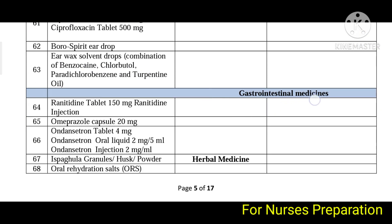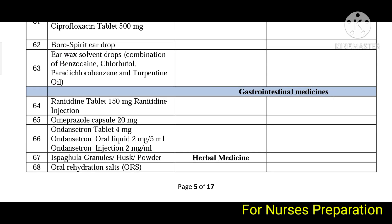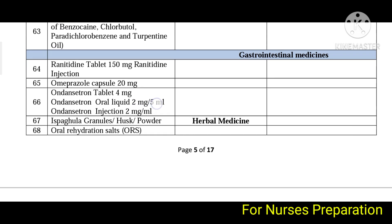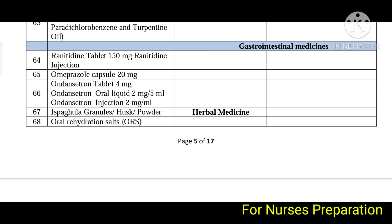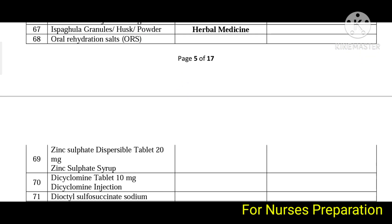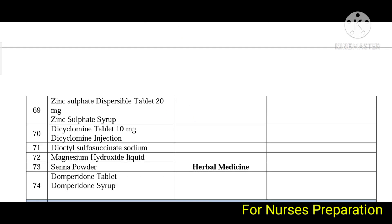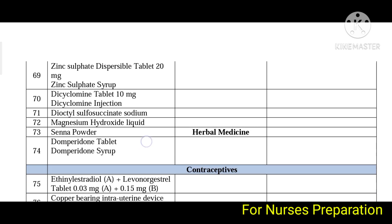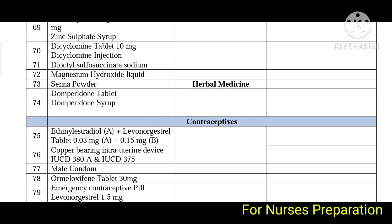Gastrointestinal medicines include ranitidine, omeprazole, ondansetron, oesophageal oral rehydration salts, zinc sulfate, dicyclomine, docusate sodium, sodium hydroxide liquid, senna powder, and domperidone tablet.